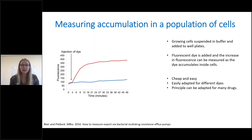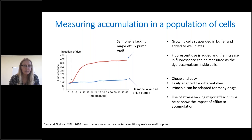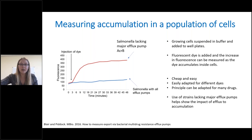This approach can also give an idea of the contribution of efflux to a particular compound. The strains on this graph are a wild-type Salmonella and one lacking the major pump ACRB. In the ACRB knockout, shown in red, the bacterium can no longer efflux ethidium bromide efficiently, so it accumulates to higher levels within the cell. It's not a perfect way to determine the role of efflux, but it does give us some information.